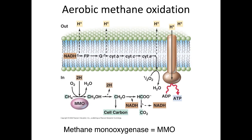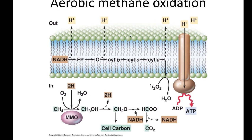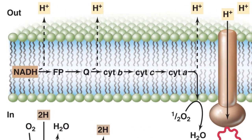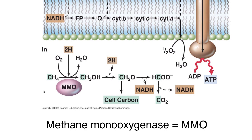For aerobic methane oxidation, you have a very similar electron transport chain: NADH going to flavoprotein, going to quinone, cytochrome B, cytochrome C, cytochrome A as the terminal oxidase, et cetera. It's very similar to what you've seen before. The big difference is that they use a different set of things to get their NADH.